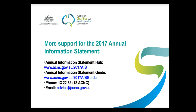For more on this section of the 2017 annual information statement, refer to the guide and other resources at the annual information statement hub. For assistance with other parts of the annual information statement, you can also view the other videos in this series. If you have any questions or need any specific assistance, you can call us on 13 2262 or email us at advice@acnc.gov.au. I hope this has been useful and thanks for watching.